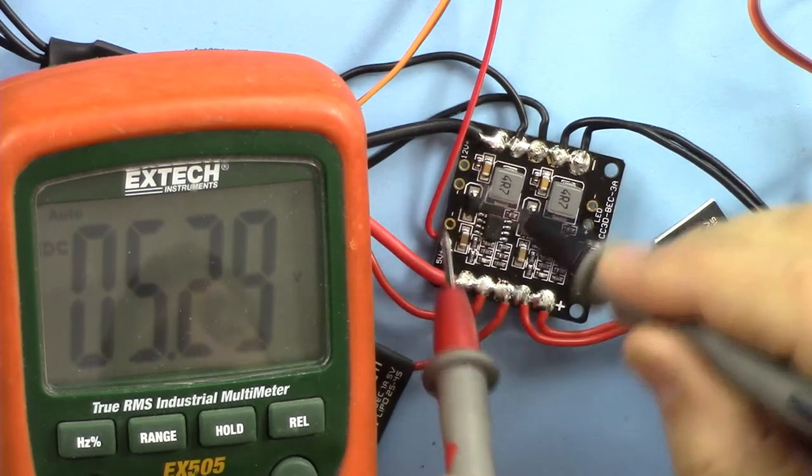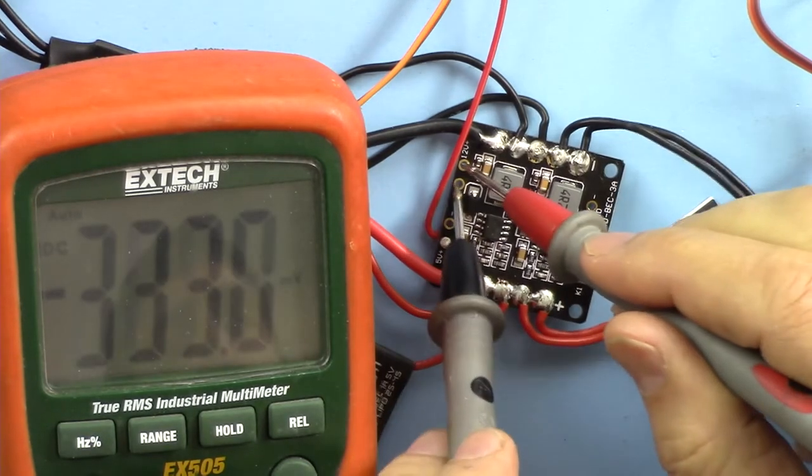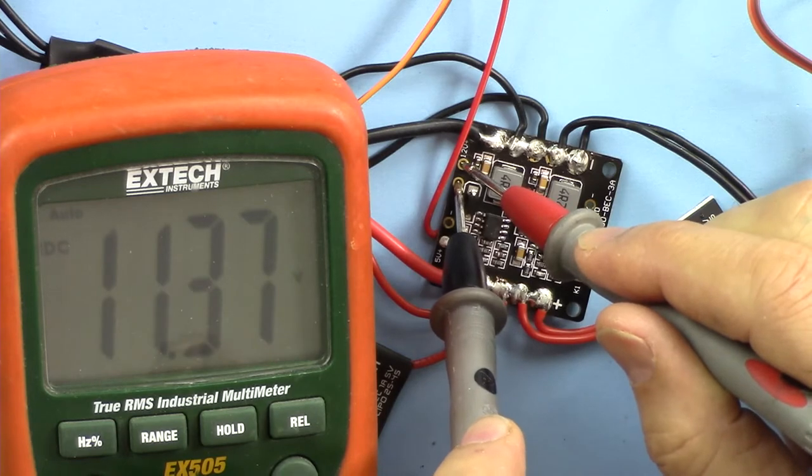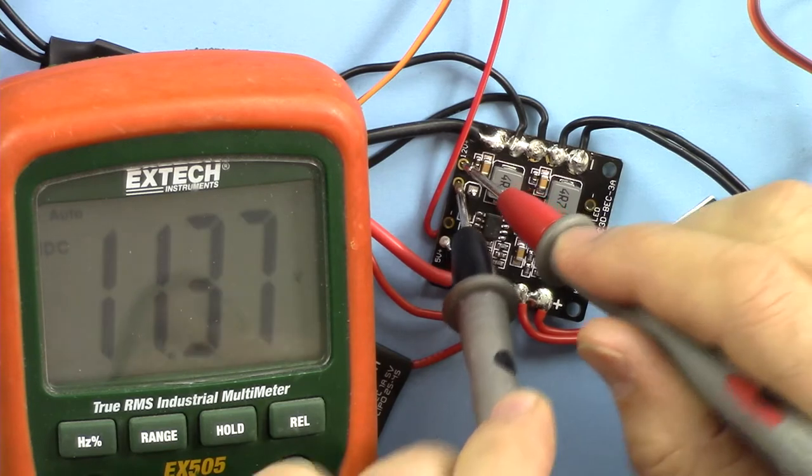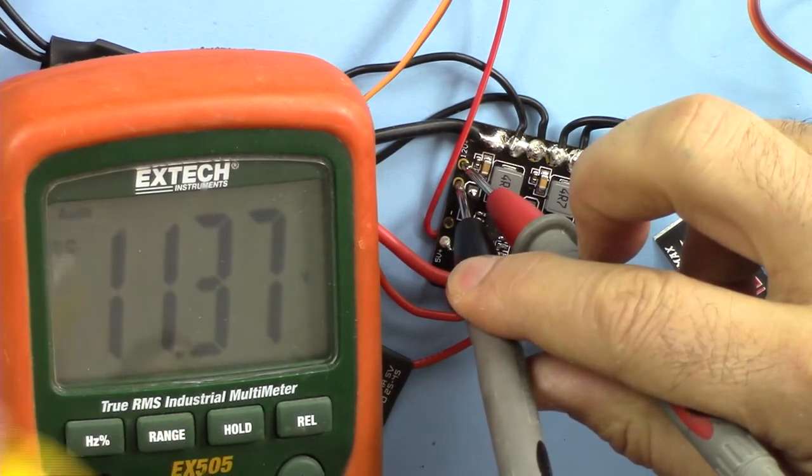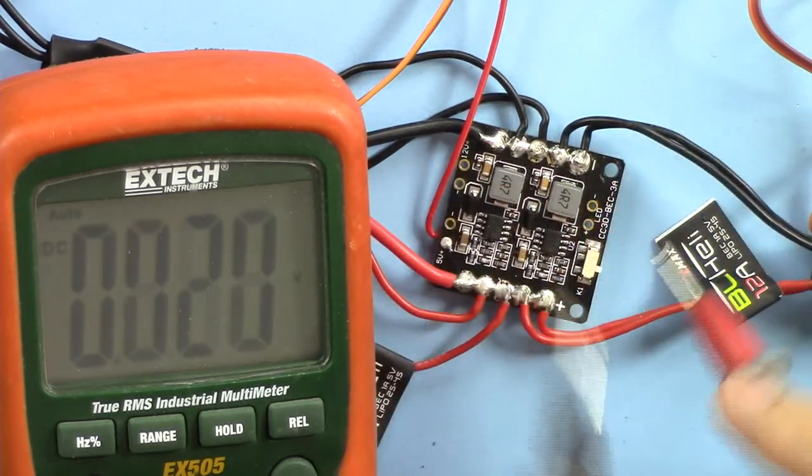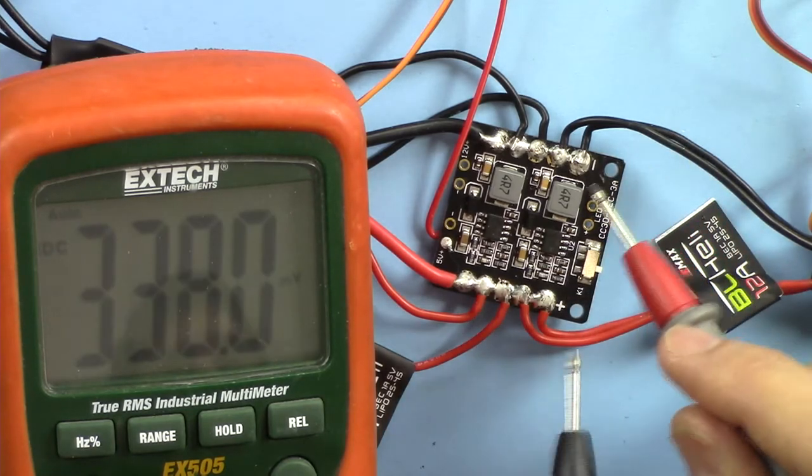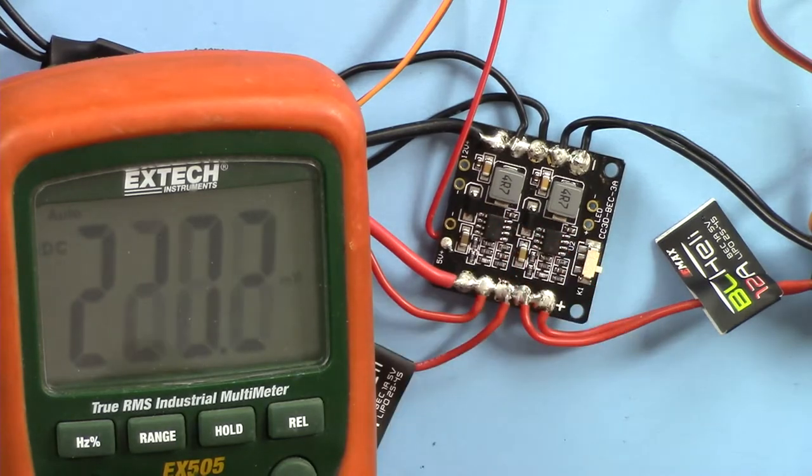And here we have, I connected reverse so we are also getting 11.3 volts. That's approximately 12 volts. For 12 volts the three-cell will give you almost the same output. But you can connect a 4-cell battery and with 15 volts you also get 12 volts, so this will regulate it. Now I have connected this to the 4-cell voltage.